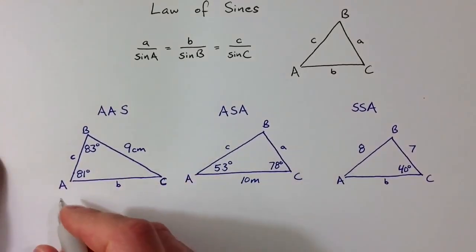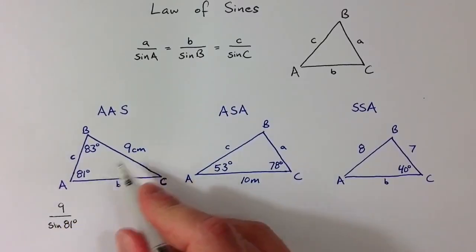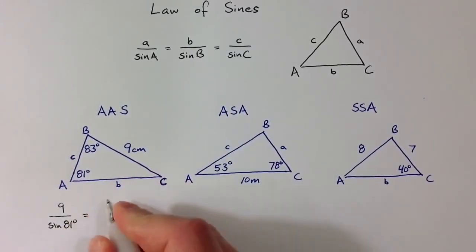So for this first problem, I know that the side length 9 divided by the sine ratio of 81 degrees, that ratio has to be the same as the unknown side length b divided by the sine ratio of 83 degrees.